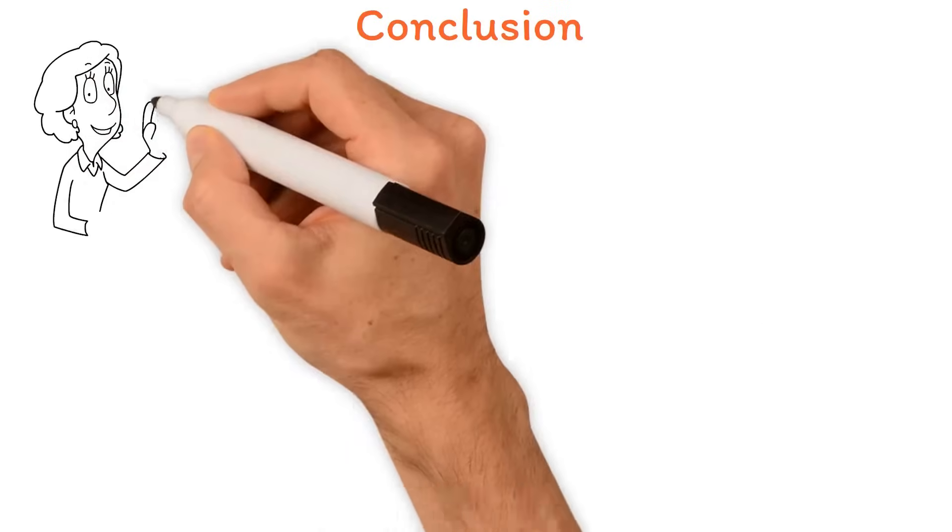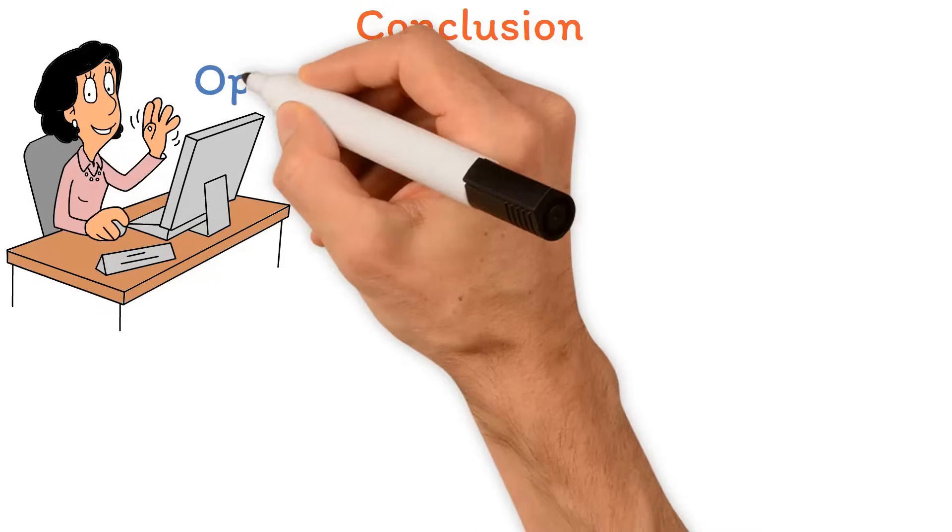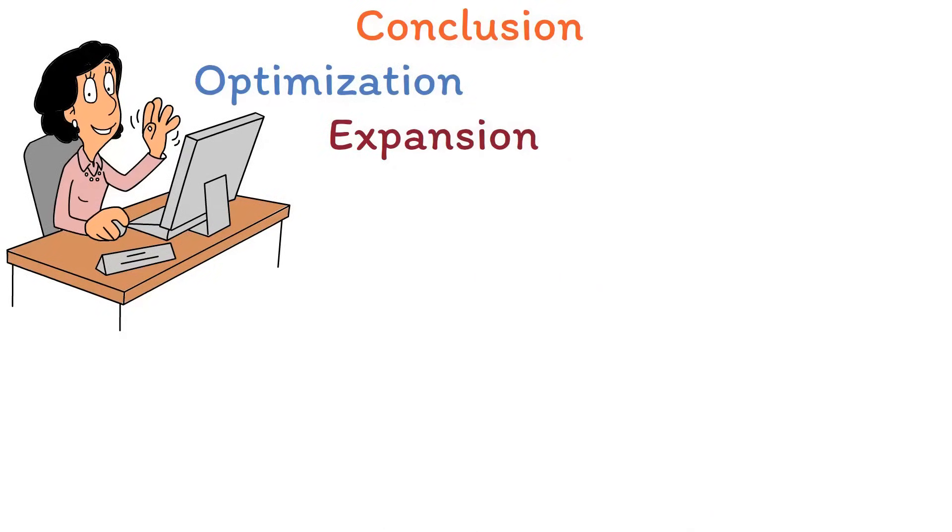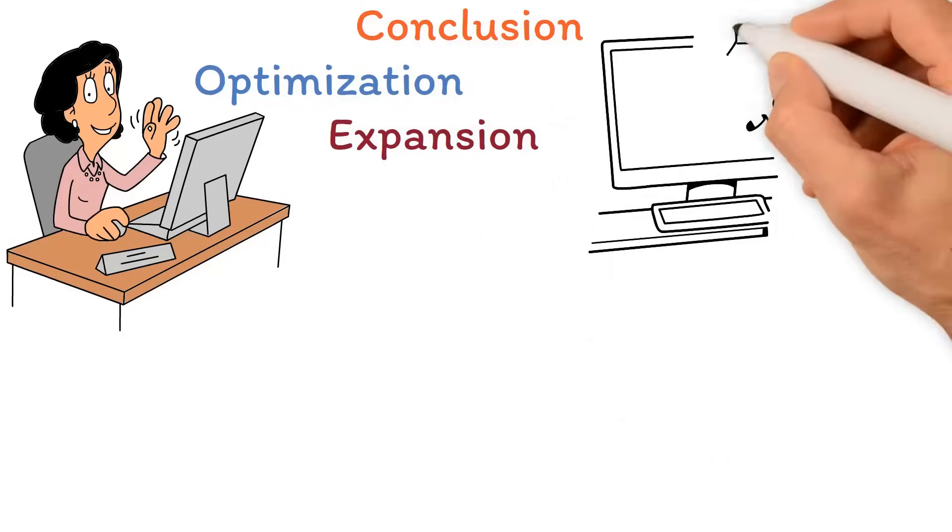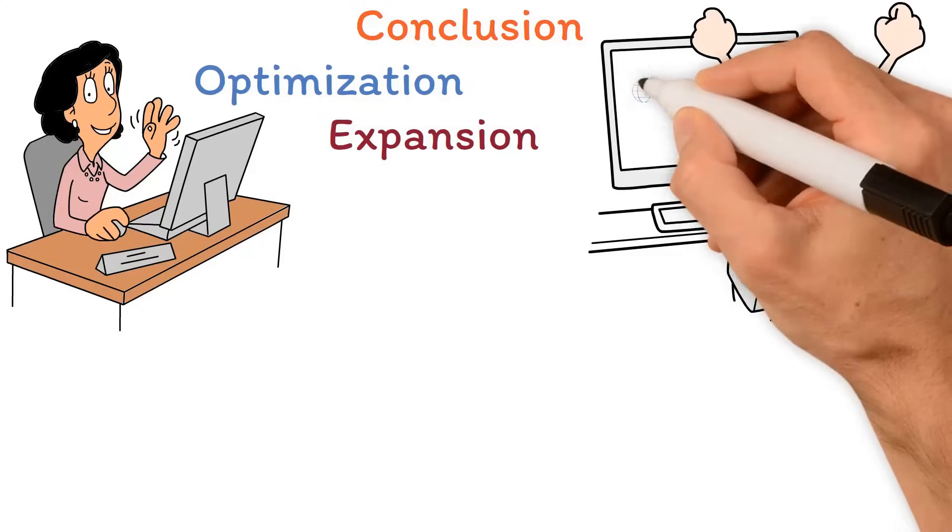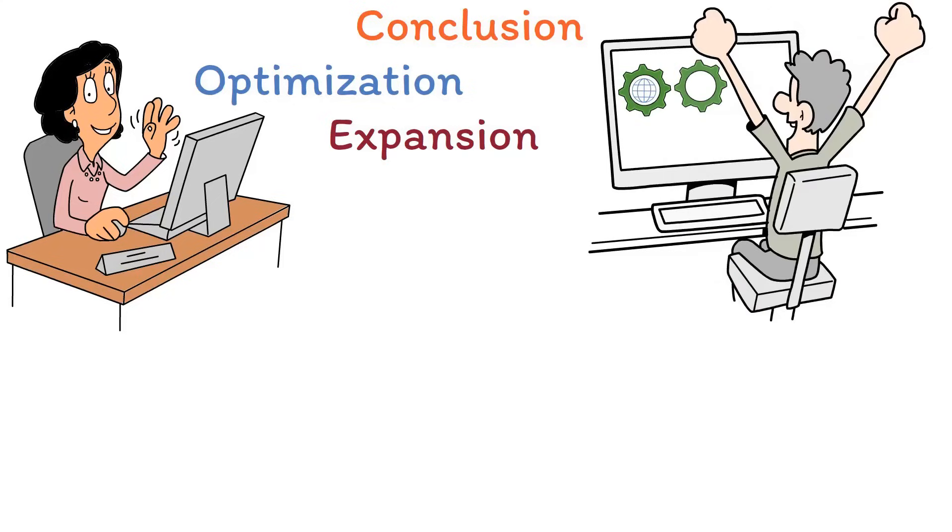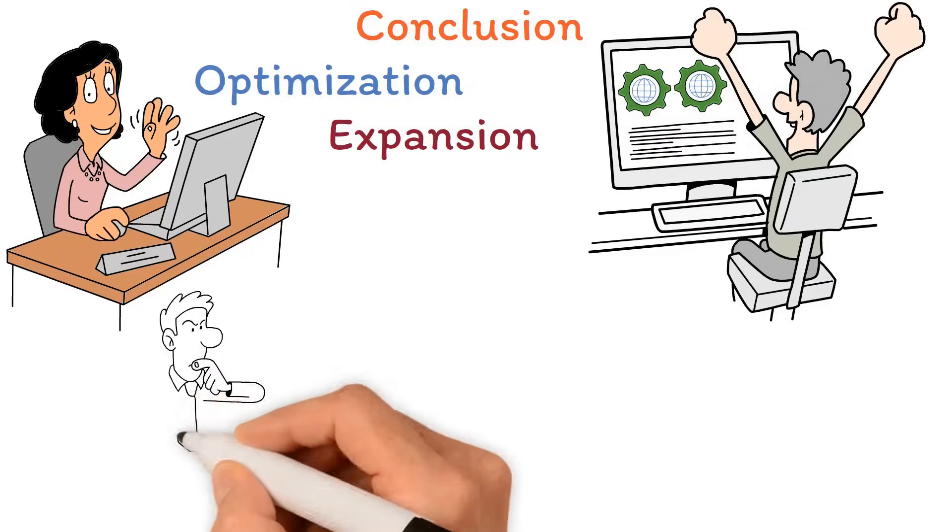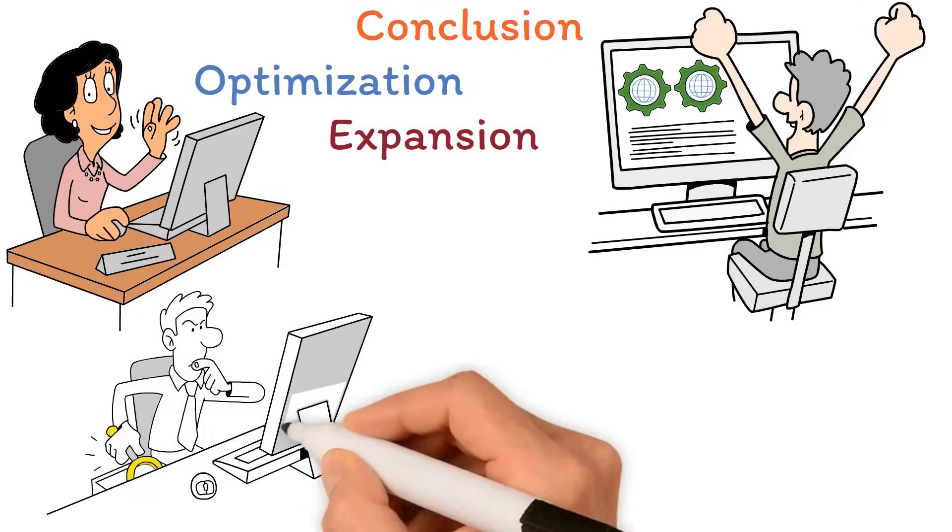In conclusion, incorporating plugins into ChatGPT holds significant promise for the optimization and expansion of AI capabilities. By enhancing the model's performance and enabling specialization in diverse domains, plugins can significantly amplify the utility of ChatGPT.